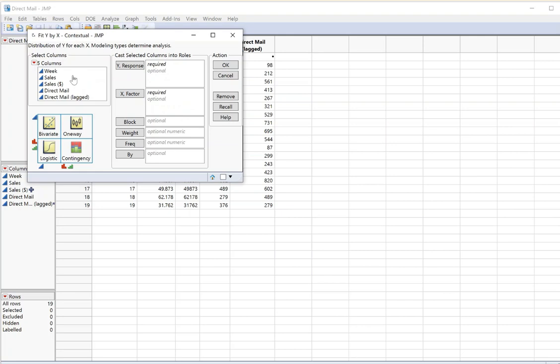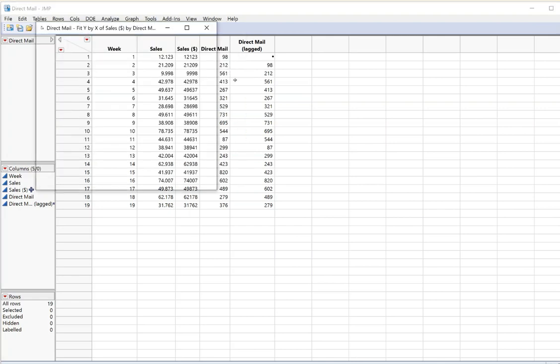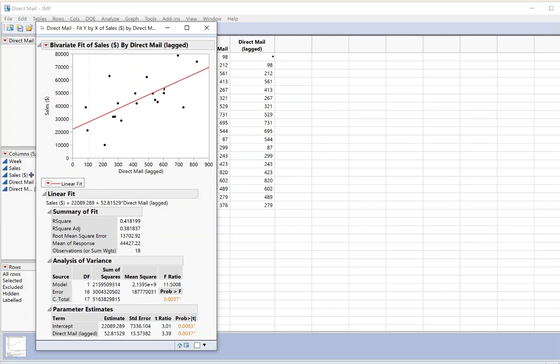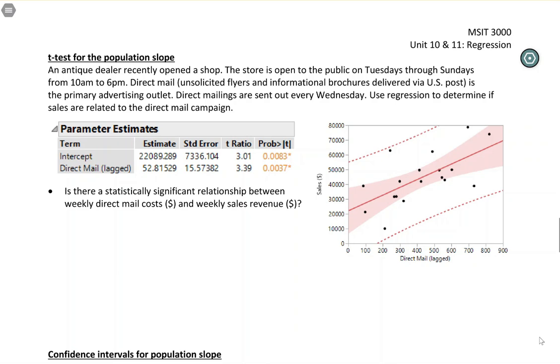So I'm going to do this again. Analyze fit y by x. Sales is still my response, but this time I'm going to put direct mail lagged as my explanatory. And I can see I've got a stronger association now. So now it's explaining about 42% of the variability. This is the model that I'm going to work with. All right. So we're going to take a look at this output.